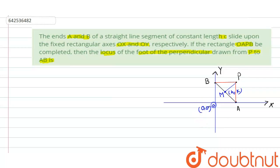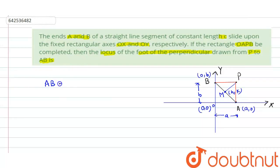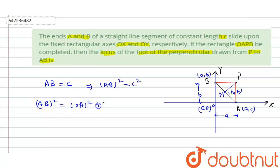Assume this is my origin. Assume distance OA is equal to a, so the coordinates of A will be (a, 0). Similarly, assume distance OB is equal to b, so the coordinates of point B will be (0, b). Note that a and b are variable. It is given that AB = c, so AB² = c². From the diagram, AB² = OA² + OB², giving us a² + b² = c². This is equation 1.